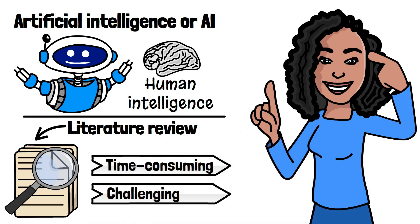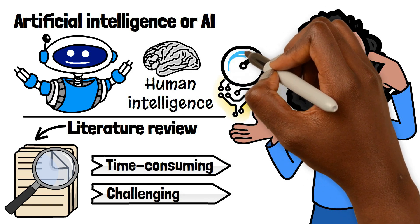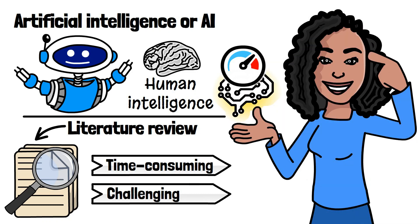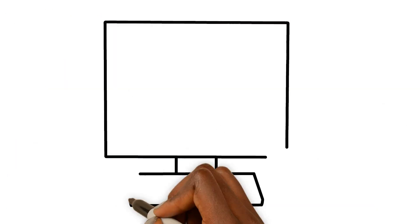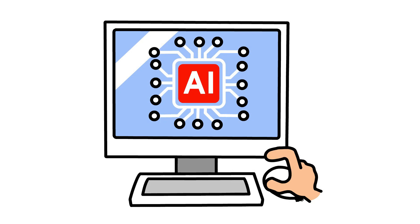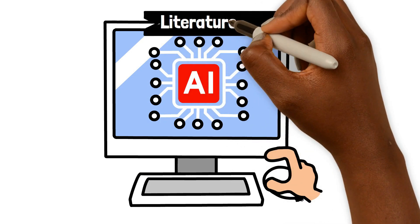That's where AI comes in. By automating certain aspects of the process, we can speed things up and produce high quality work. So how can we use AI to conduct rapid literature reviews?